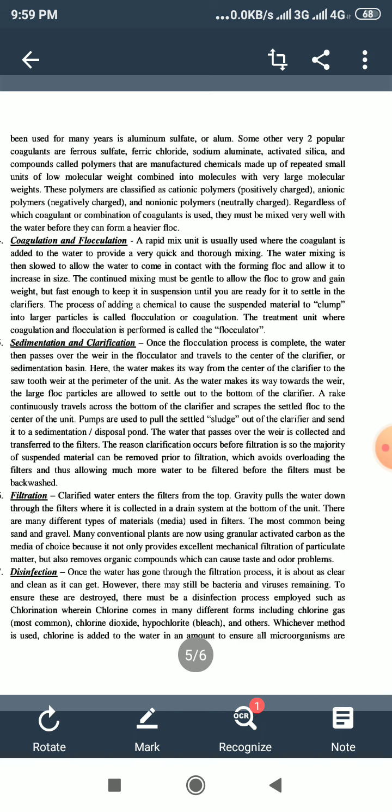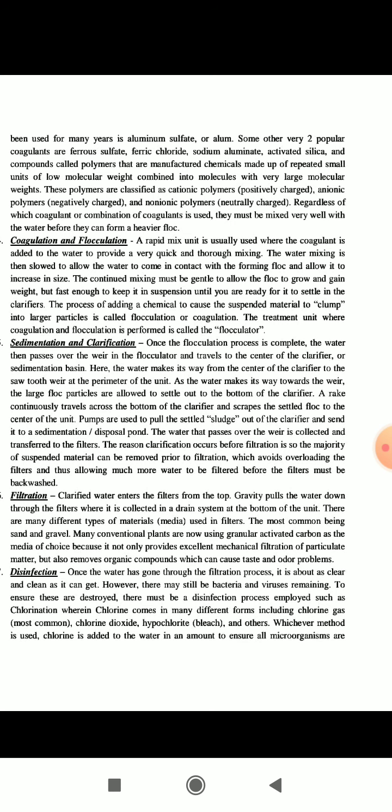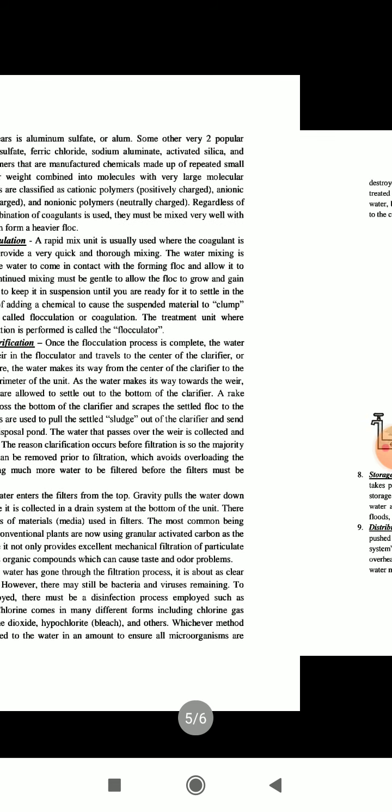Next is disinfection. Once the water has gone through the filtration process, it is about as clear and clean as it can get. However, there may still be bacteria and viruses remaining. To ensure these are destroyed, there must be a disinfection process employed such as chlorination, where chlorine comes in many different forms including chlorine gas (most common), chlorine dioxide, hypochlorite bleach, and others. Whichever method is used, chlorine is added to the water in an amount to ensure all microorganisms are destroyed.